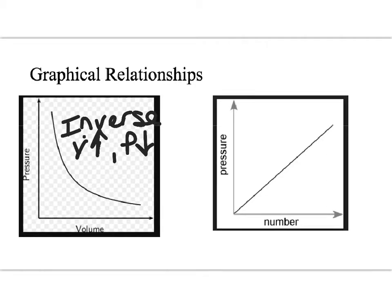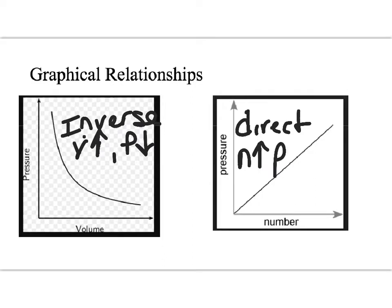In part two of the lab, we looked at what happened when you changed the number of particles, and what you should have seen is that they had a direct relationship. As the number increased, the pressure also increased. That's because if you have more particles, you're going to have more collisions occurring, and therefore more pressure.